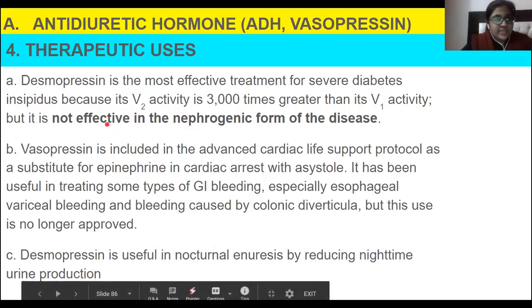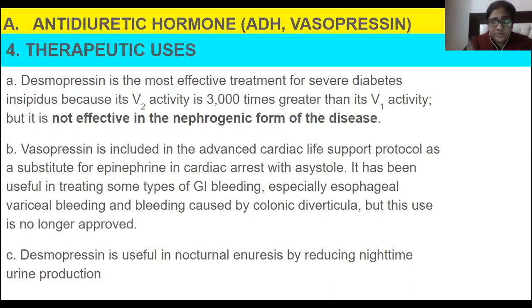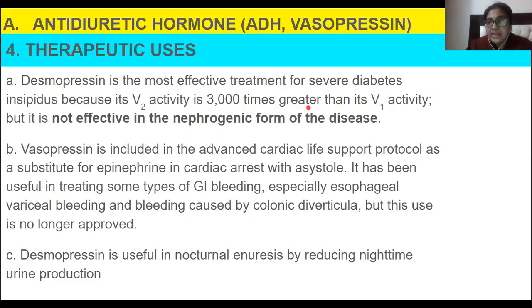Vasopressin maintains water levels in the body by decreasing water excretion by the kidneys. Desmopressin is the most effective treatment for severe diabetes insipidus because its V2 activity is 3,000 times greater, so water is retained in the cell and excretion is decreased.